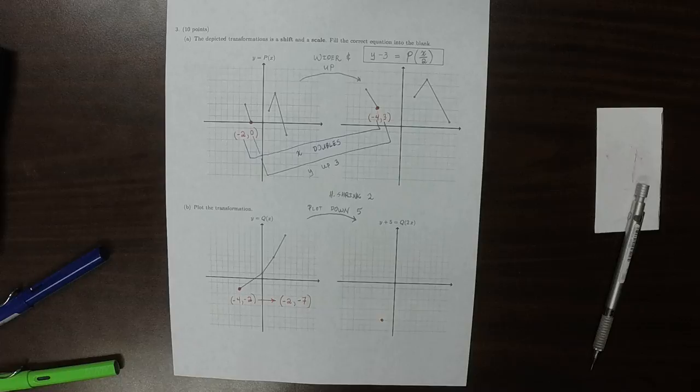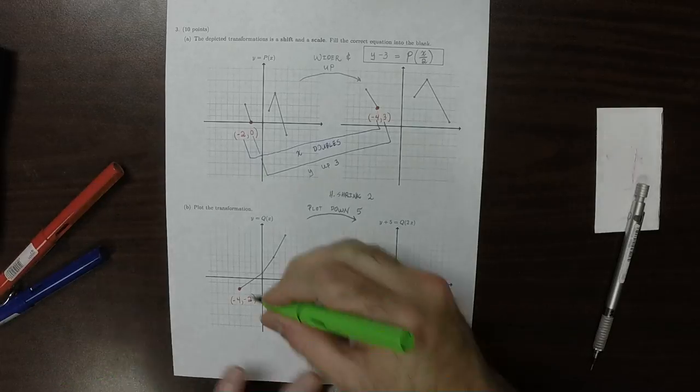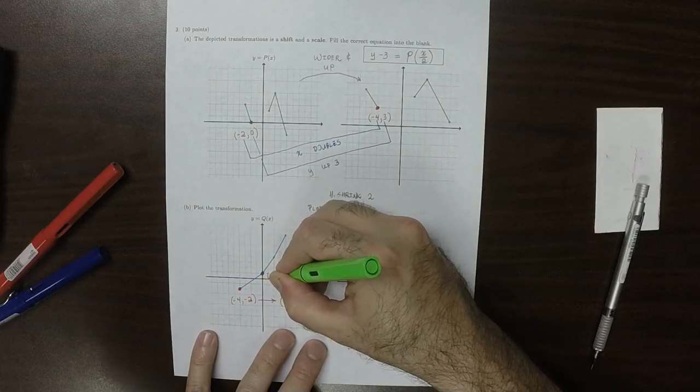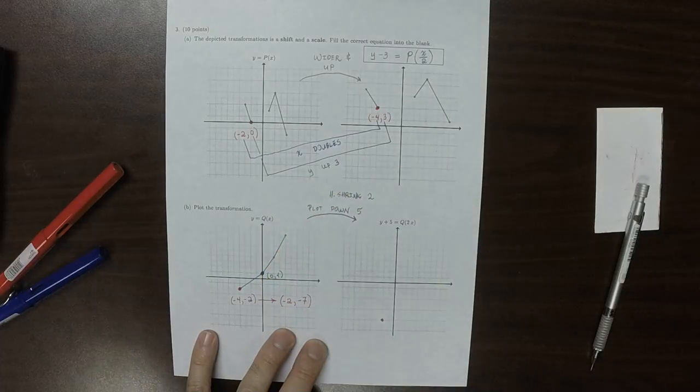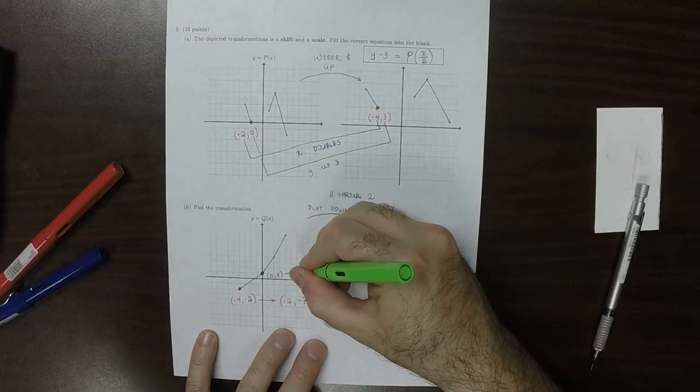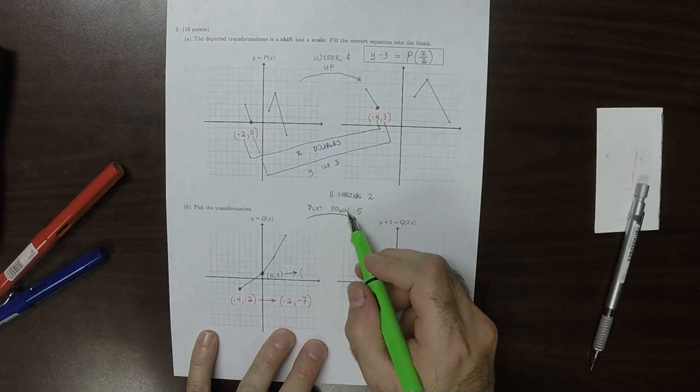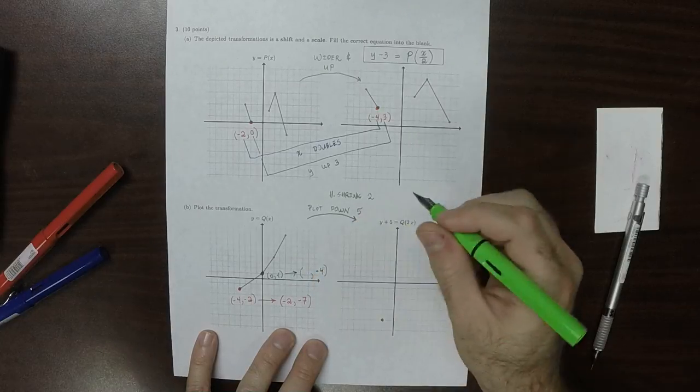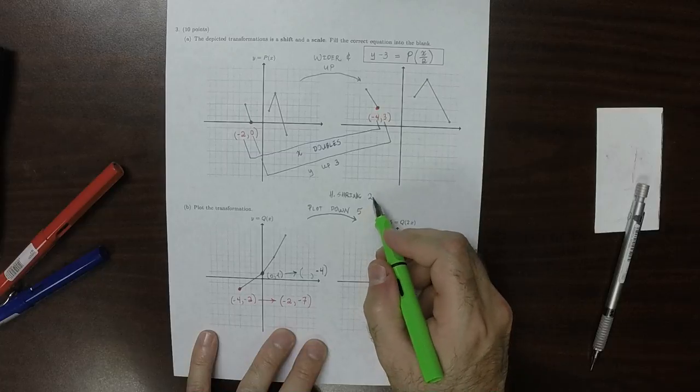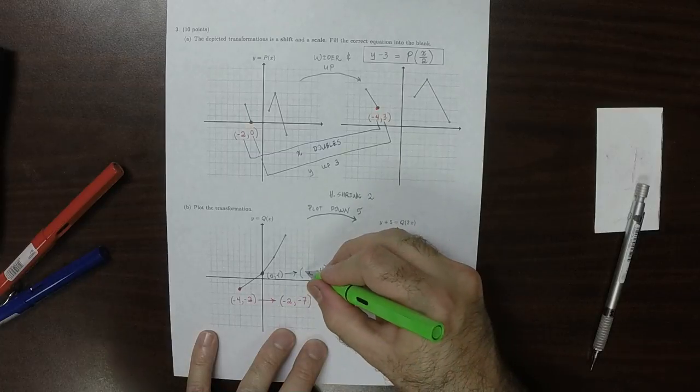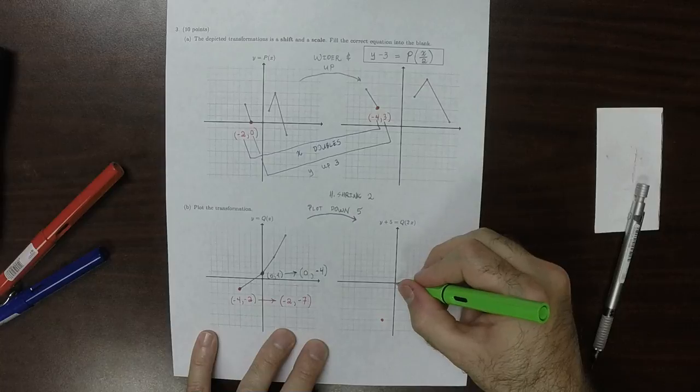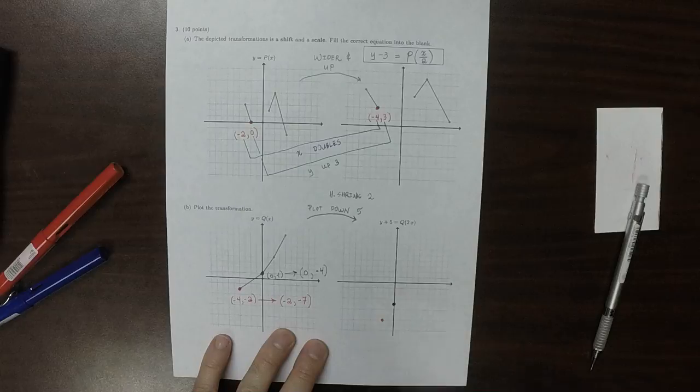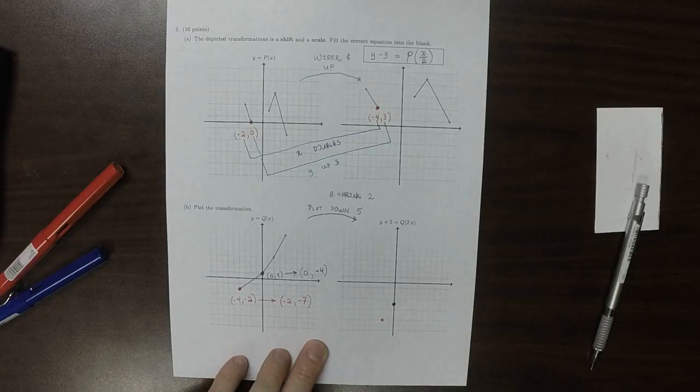Let's try another one. So this is the point (0, 1). So it's going to become, so the plot's going to move down 5, so then it's going to go to (-4) in height. And then horizontal shrink of 2, so we need to divide 0 by 2, but that's still 0. So (0, -4).